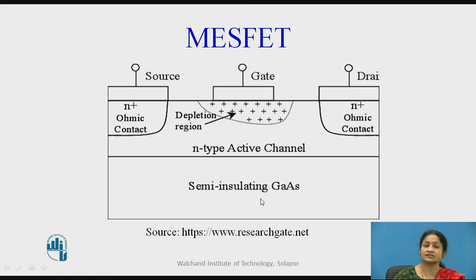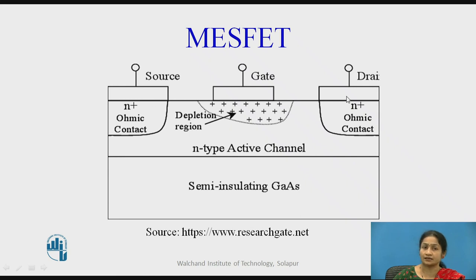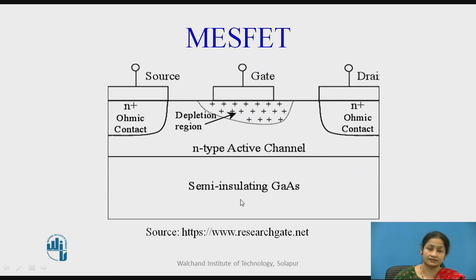This is the structural diagram of the MESFET. Here, the whole region is designed using semi-insulated gallium arsenide, in which P-type active layers are used, and the three terminals — source, drain, and gate — are connected via ohmic contacts. A gallium arsenide N-type epitaxial layer is grown on the gallium arsenide semi-insulating substrate.